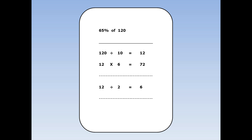Finally, we add 60% and 5% together. 60% is 72 and 5% is 6. 72 plus 6 is 78.